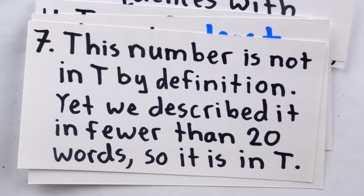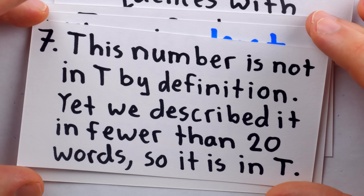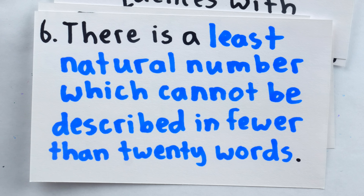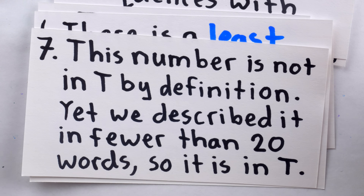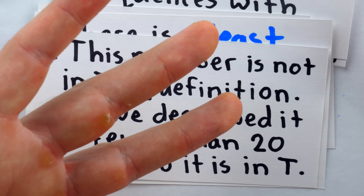The paradox is clear. We agreed T is a finite set, and so there are numbers not in T. But then the smallest such number that isn't in T, by virtue of it not being in T, has to be in T. That doesn't make any sense at all. We've got this element that is both in T and not in T.